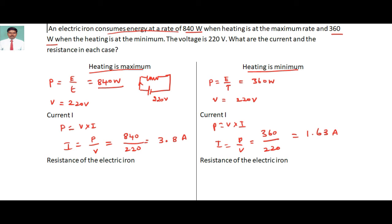Now I will calculate the resistance of the iron for both current values. The potential difference is constant at 220 volts. From Ohm's law, V equals IR, so R equals V divided by I. For the first case, R equals 220 divided by 3.8, which equals 57.8 ohms.